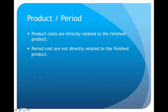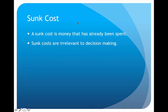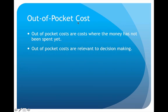Then we have product versus period — some costs are directly related to the final product, whereas other costs are not, so they would simply be classified as a period cost. Then we have a cost known as a sunk cost, which simply means that the money has already been spent. Since it's too late to do anything about it, sunk costs are irrelevant to our decision making. Then we have an out-of-pocket cost — this is the opposite: the money has not yet been spent, so these are relevant to decision making because we still have an opportunity to do something about this type of cost.